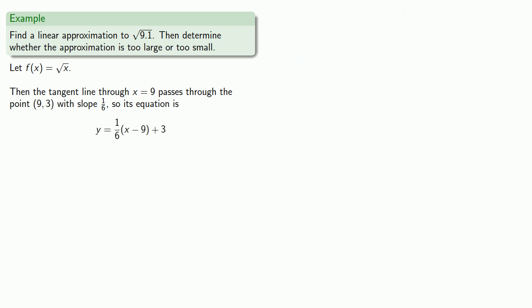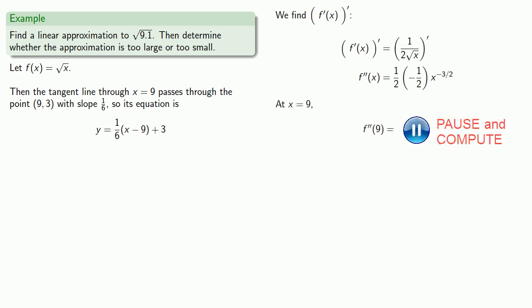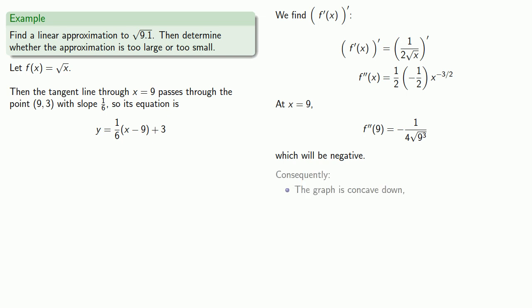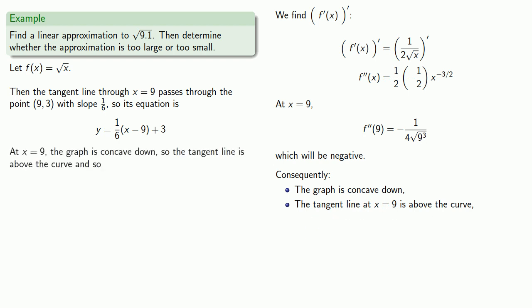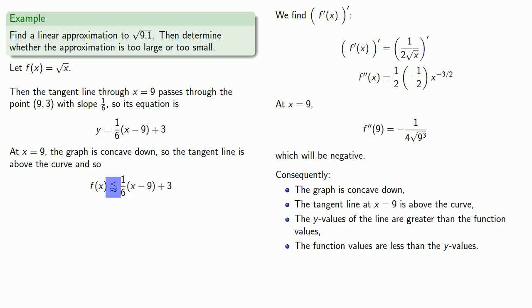To determine whether our approximation is too large or too small, we look at the second derivative. Finding the second derivative and evaluating it at x equals 9, we don't need the actual value — just the sign. In this case the second derivative is negative, so the graph is concave down, and the tangent line at x equals 9 is above the curve. This means the y values of the tangent line are greater than the actual function values, so the square root of 9.1 is less than — but approximately equal to — (1/6)(0.1) + 3.